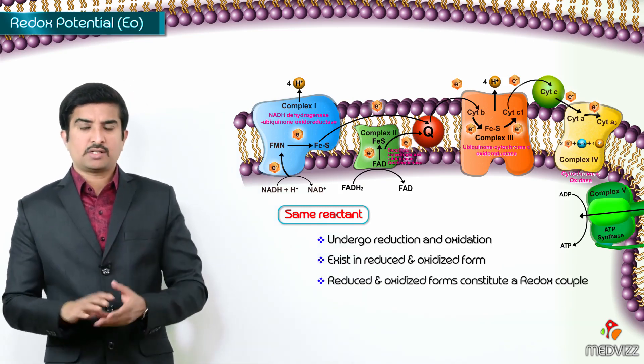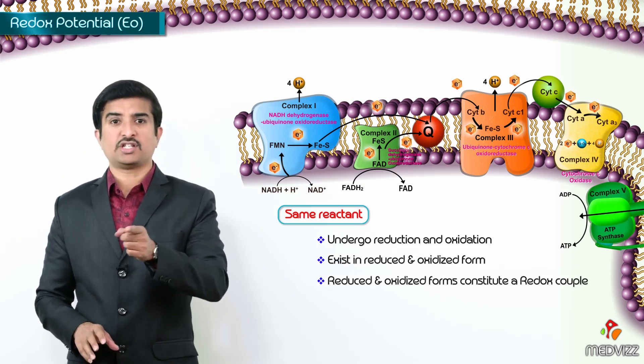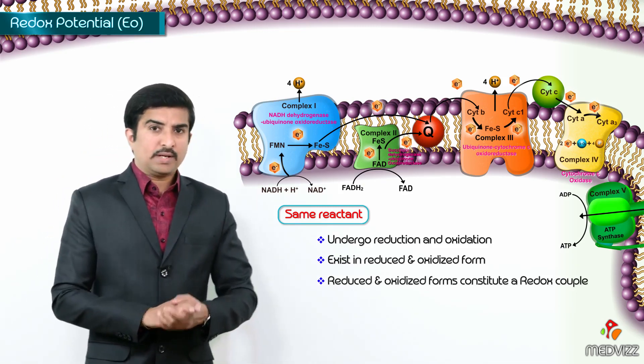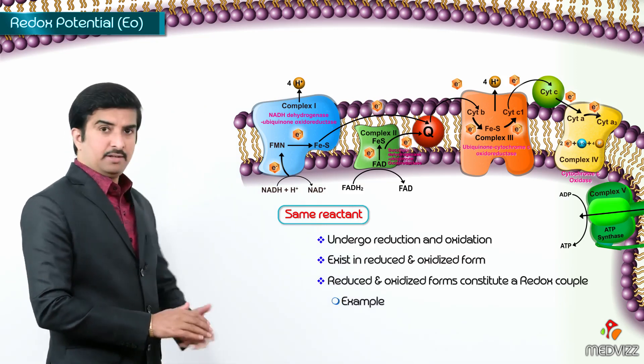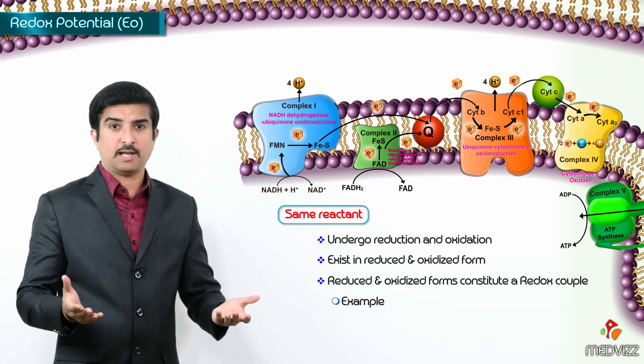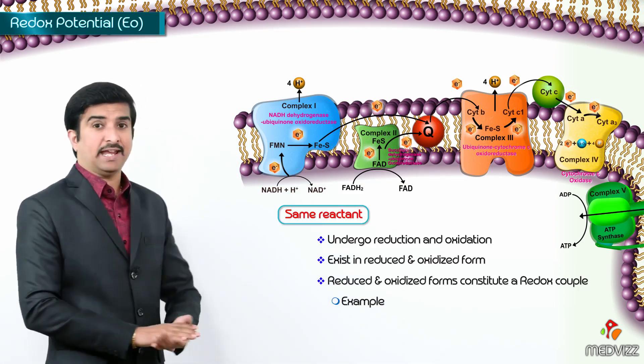So, here the reduced as well as the oxidized forms of the reactant constitute a redox couple. We can see the best example here because we are discussing the electron transport chain in the same chapter. So, you can understand better by taking the example of NAD+.